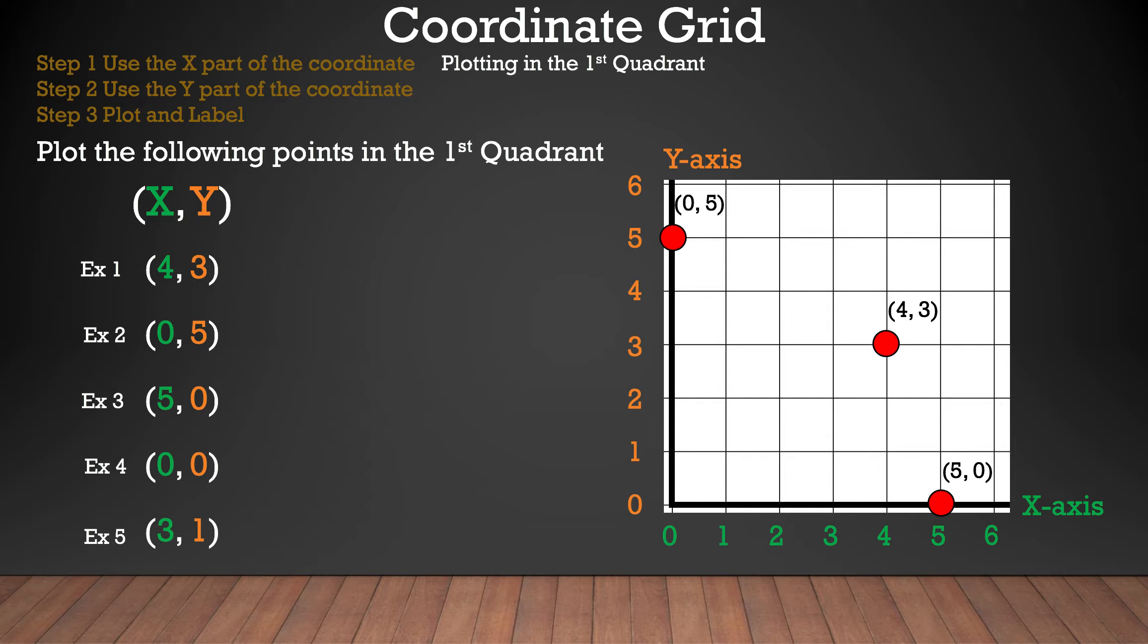Now we're going to take a look at example four. This is a zero, so there's nowhere to go. And the next number is a zero as well, so there's nowhere to go. Now we plot and label, and we're done with that example.